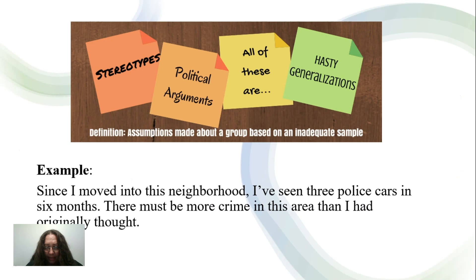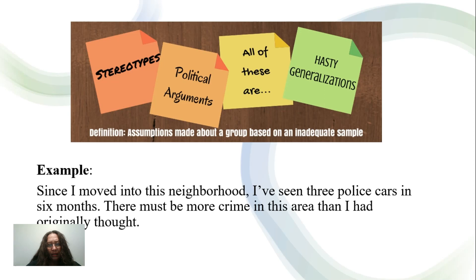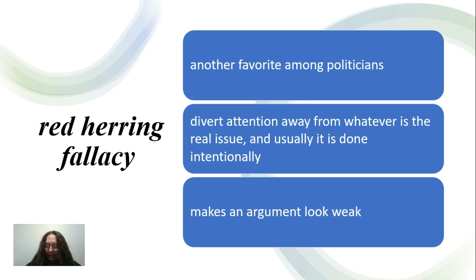So let's look at an example. Since I moved into this neighborhood, I've seen three police cars in six months. There must be more crime in this area than I had originally thought. Well, the fact that you've seen three police cars in six months does not necessarily mean that it's a dangerous neighborhood. Probably there are police officers living there, or there was an activity they attended. So the possibilities are many. Therefore, the argument relies on hasty generalizations and it is a logical fallacy.